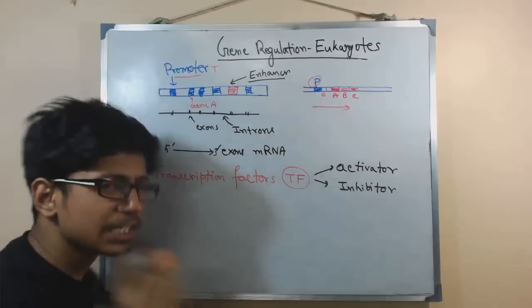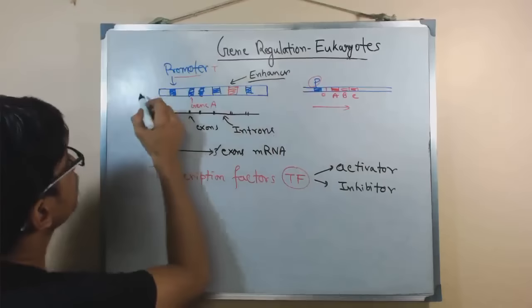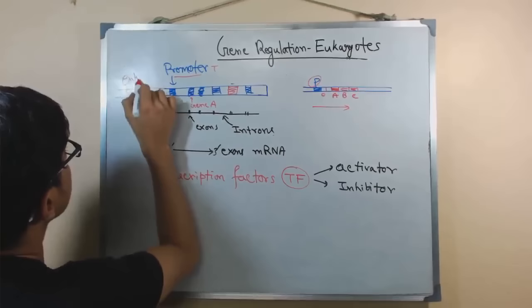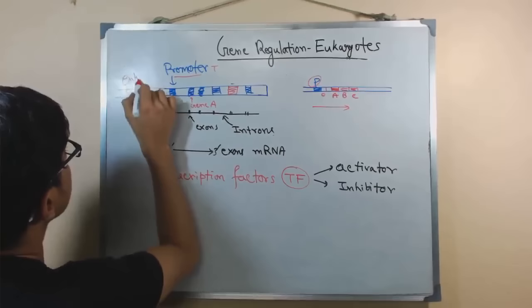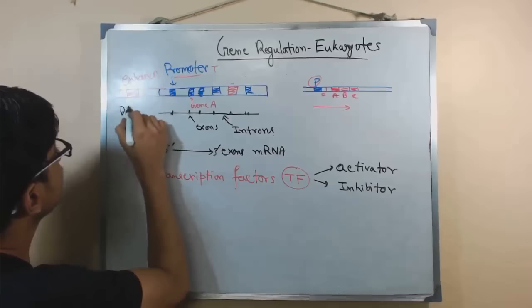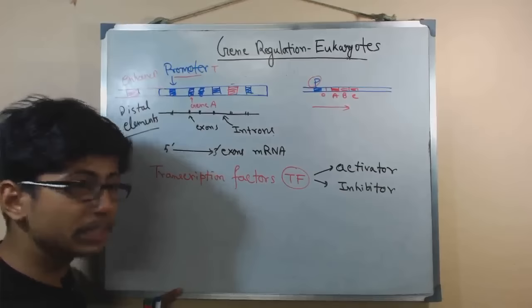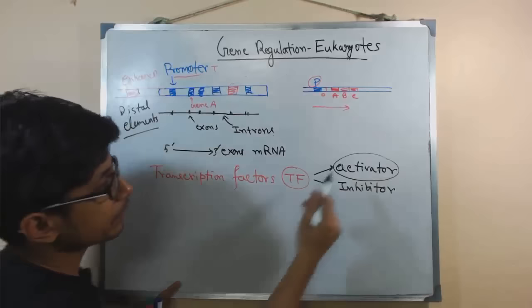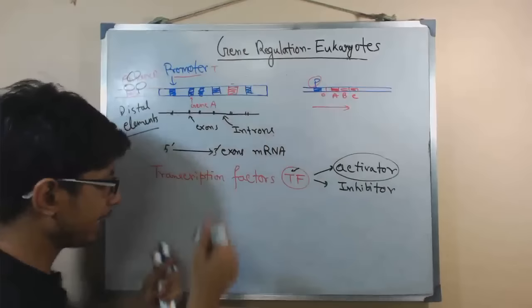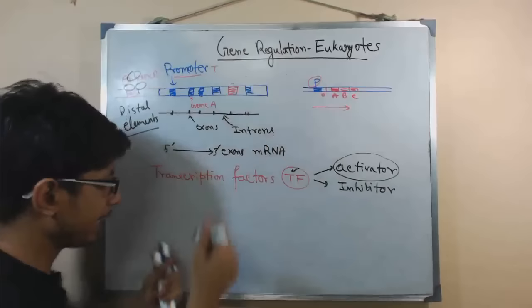These enhancer sequences are particular sections present further upstream of the gene — most of the time they are upstream. This enhancer region is called a distal element in the DNA. The enhancer region is very specific to interact with activator proteins, which are nothing but transcription factors. They bring all those activator proteins there and actually fold the DNA as a loop.